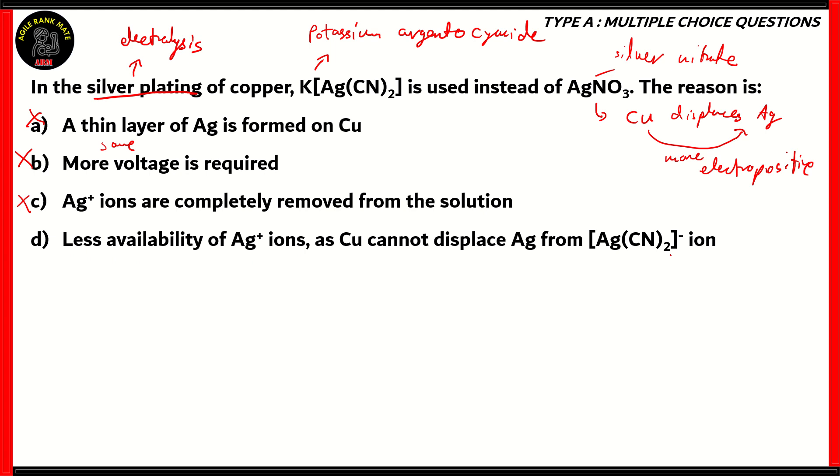Option D: less availability of Ag+ ions as Cu cannot displace Ag from the argentocyanide ion. That is true because when we use potassium argentocyanide, there is a slow rate of displacement. Since copper is more electropositive than Ag, we would need a complex ion in order to have a slow rate of displacement. We need a slow rate of displacement because we're just doing electroplating and not complete electrolysis. Therefore option D is the correct option. If we use potassium argentocyanide, you get less availability of silver ions because copper cannot displace silver completely from the argentocyanide ion.